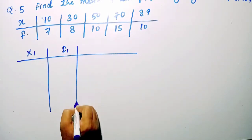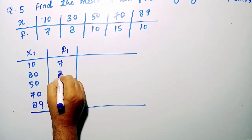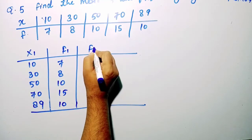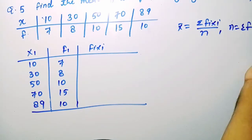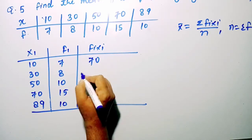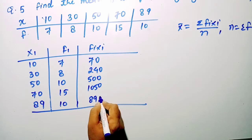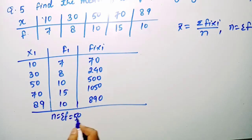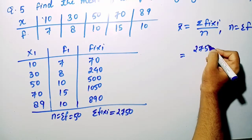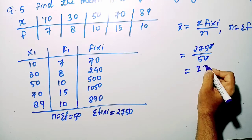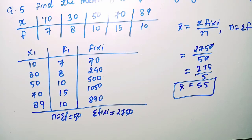Next similar question: observations are 10, 30, 50, 70, 89 with respective frequencies 7, 8, 10, 15, 10. Finding fi·xi for each term and summing: Σ(fi·xi) = 2750, and n = Σfi = 50. Applying x̄ = 2750 / 50 = 55. So the mean of the given data is 55.